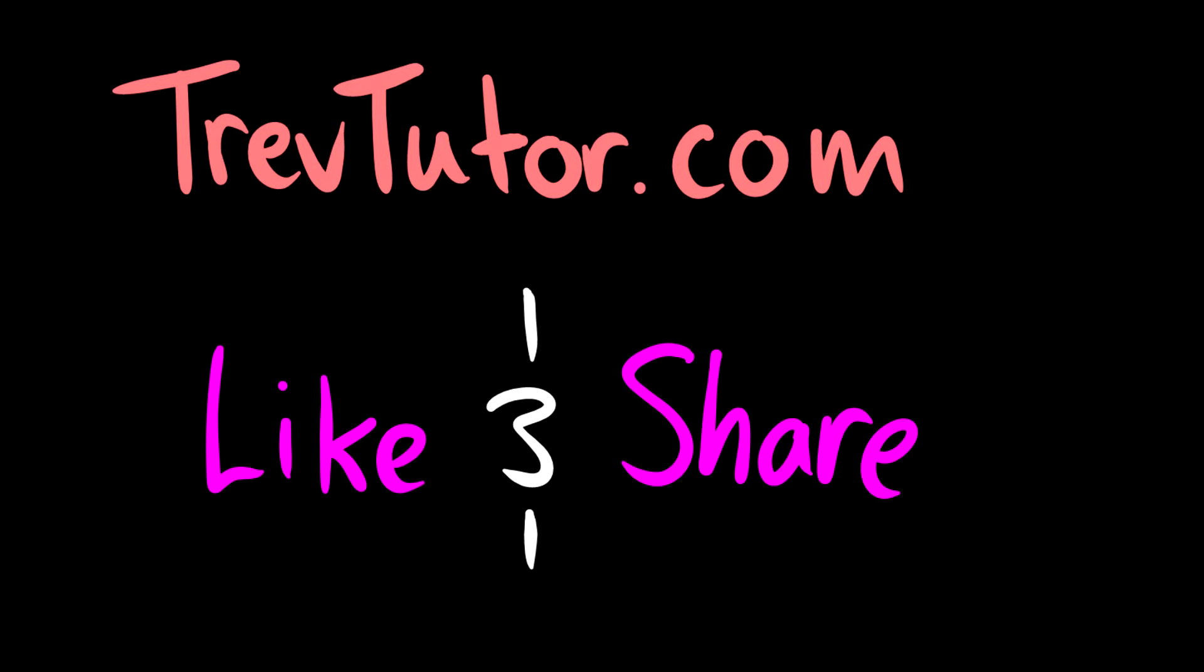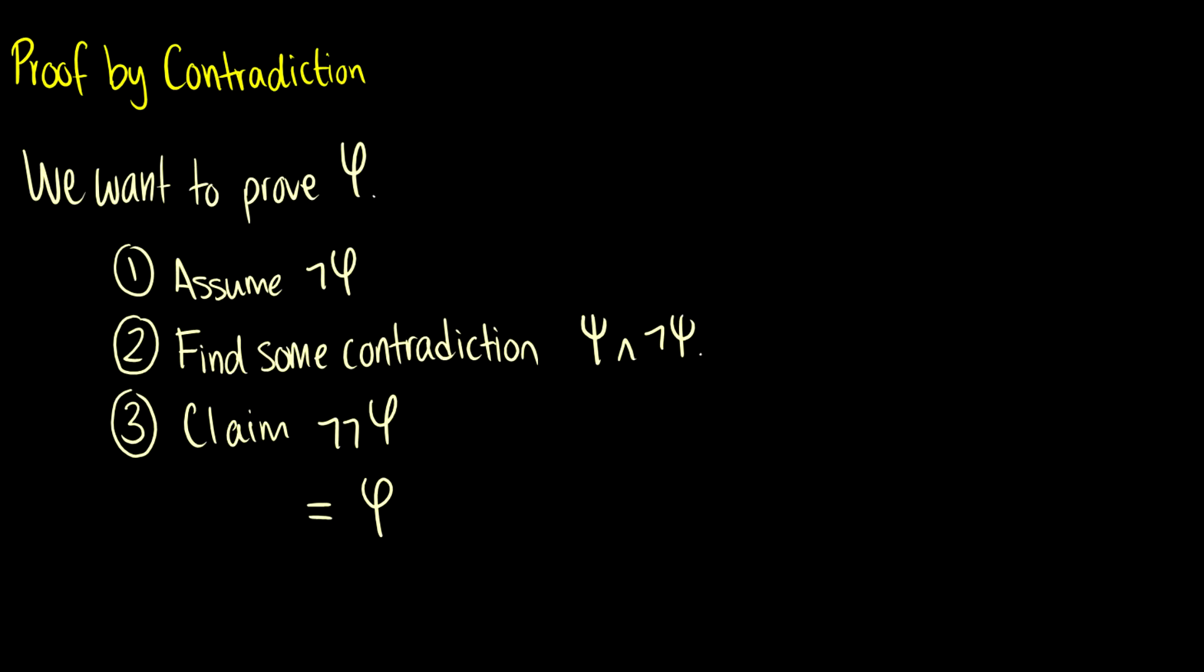Hey everybody, welcome back to Discrete Mathematics. Today we're going to talk about proof by contradiction. It's a very powerful proof tool. Here's the structure: we want to prove some statement φ, so we assume not φ. We assume that the opposite is true, then we find some contradiction with information we have, and with that contradiction we can prove that not not φ is true, which is the same thing as φ.